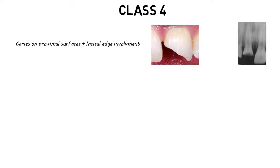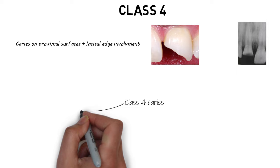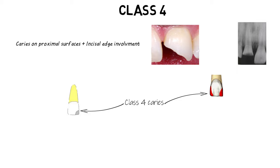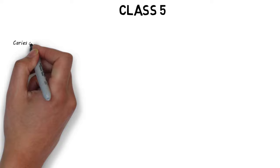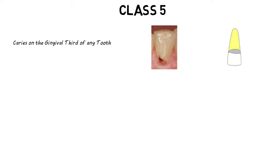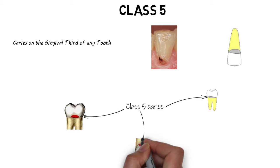Class 4 includes lesions occurring on the proximal surfaces of the anterior teeth that also involve the incisal edges. Class 5 basically includes caries lesions occurring on the gingival third, or the cervical third, of the tooth. This can be any tooth, anterior or posterior, and the lesions may involve the cementum, the enamel, or both — but it must be on the gingival third to be named a Class 5 lesion.